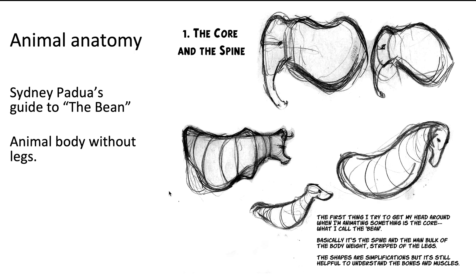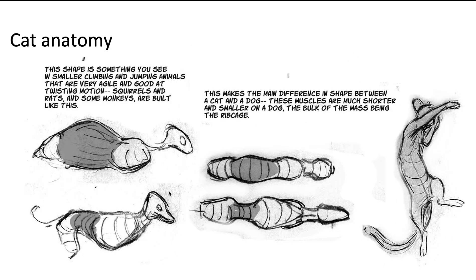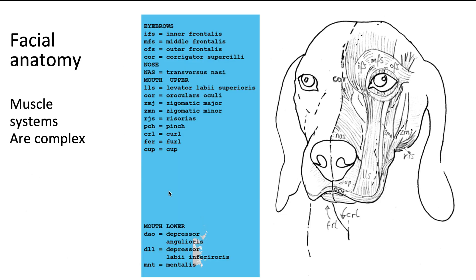Sydney likes to talk about an animal's body as being kind of like a bean — this is more useful for drawn animation perhaps than for 3D, but it's a helpful way of thinking about animal anatomy. When animating, you should always think about how the muscles work and try to be as technically accurate as possible. Most animation rigs will attempt to reproduce the actual skeletal structure and, where applicable, the muscular structure of the animals and creatures.